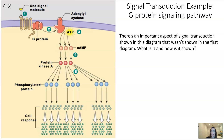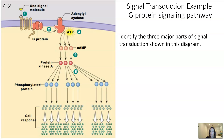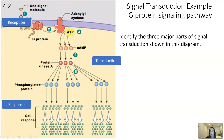For example, protein kinase A triggers three phosphorylated proteins, and those go on to have a response on many different molecules. So amplification is where a single signal molecule can end with a large-scale response. The three major steps of signal transduction — reception, transduction, and response — are all visible here: reception where the signal molecule reaches the receptor, transduction as the in-between steps, and response down below.